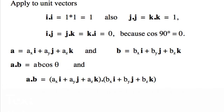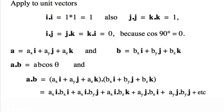But if we expand them in terms of their components. Now, only the i dot i, j dot j, and k dot k terms contribute. So, a dot b equals ax bx plus ay by plus az bz.